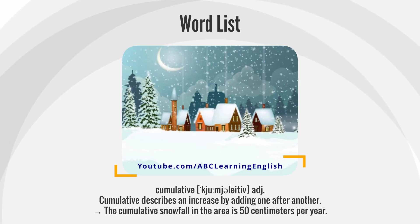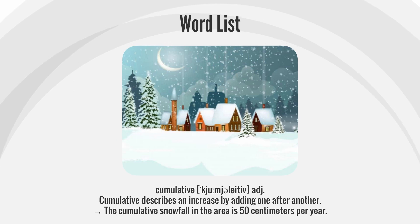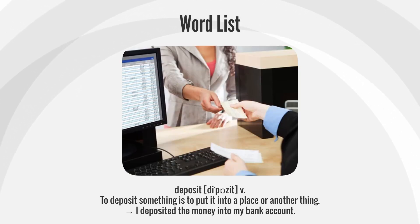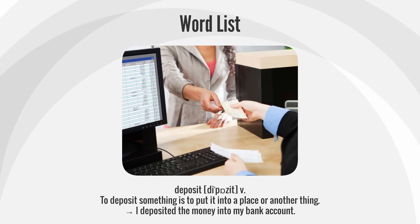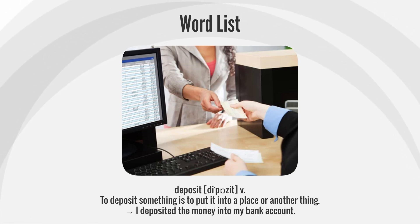Cumulative. The cumulative snowfall in the area is 50 centimeters per year. Deposit. To deposit something is to put it into a place or another thing. I deposited the money into my bank account.